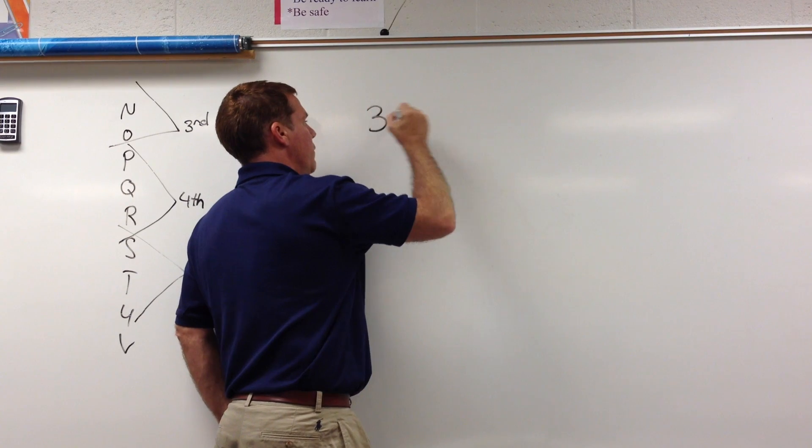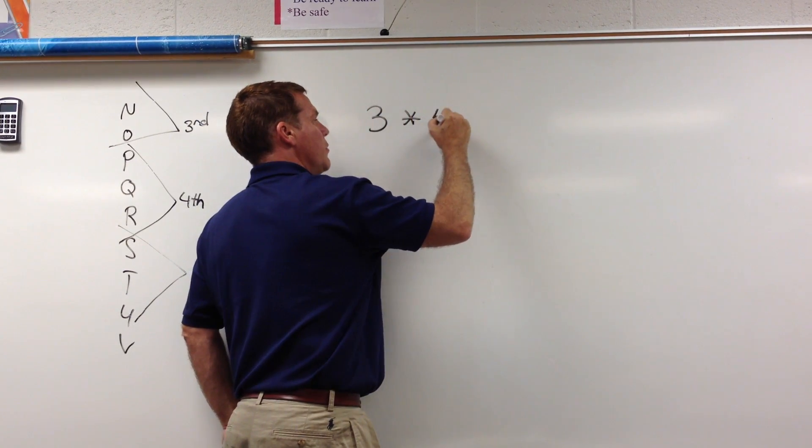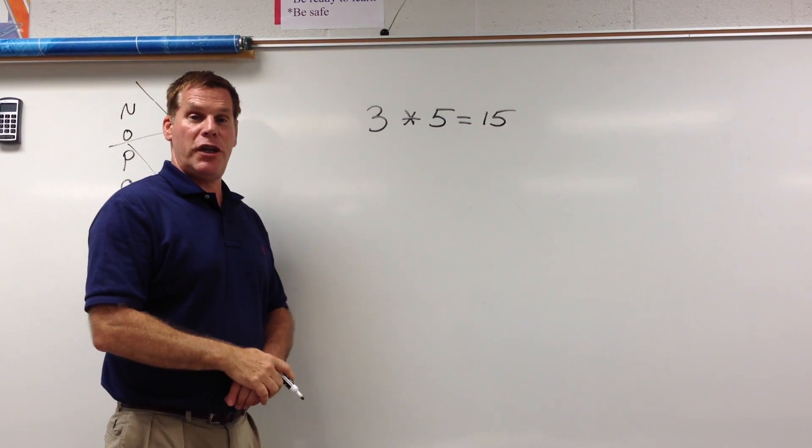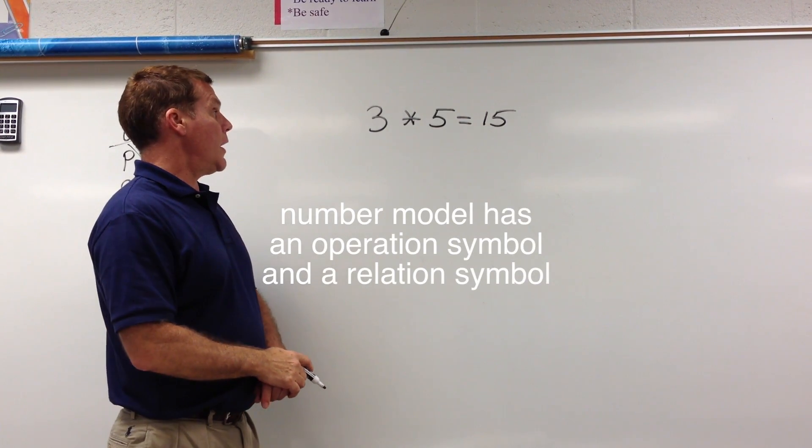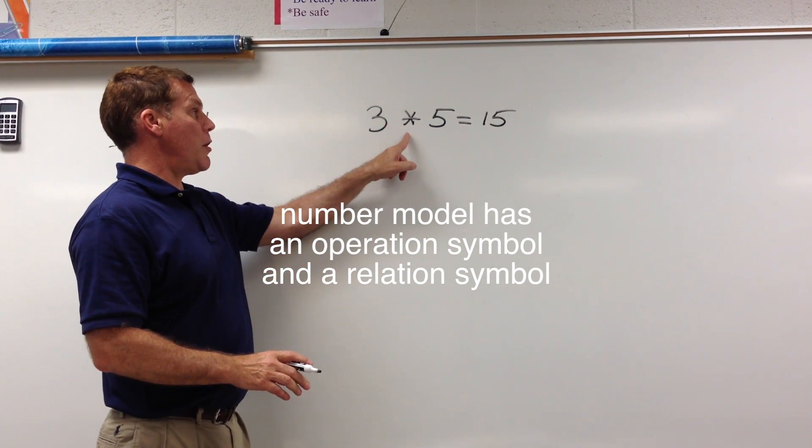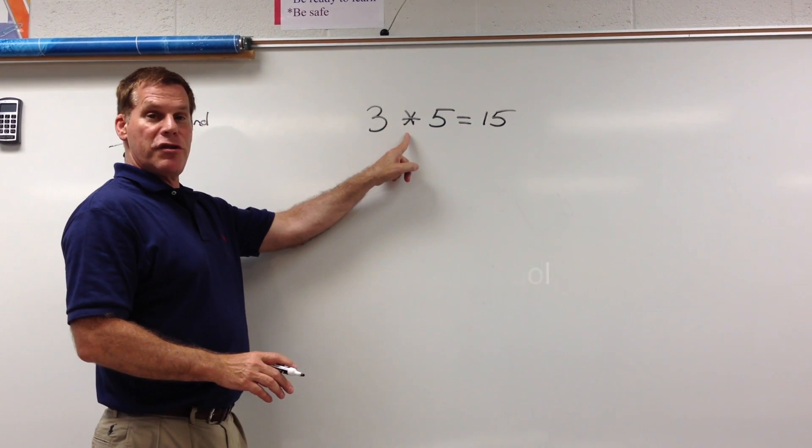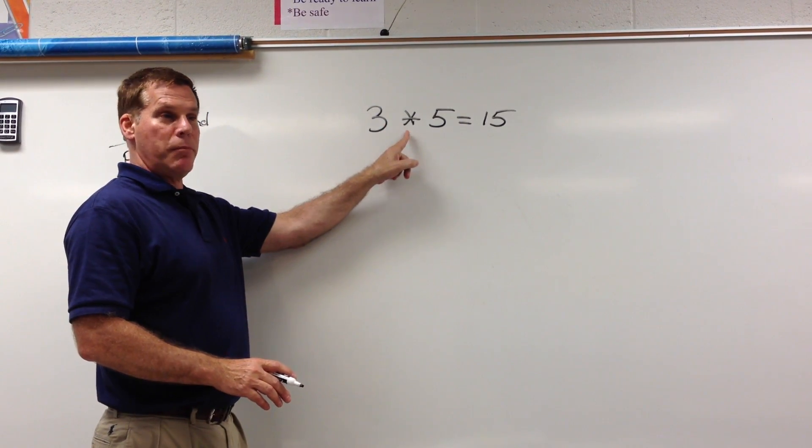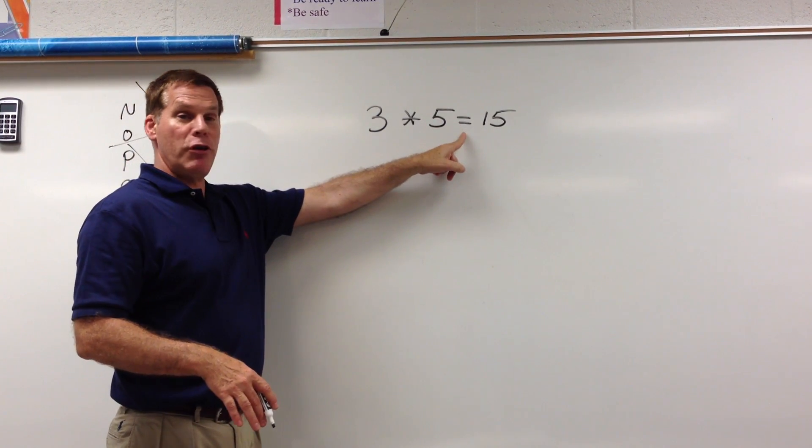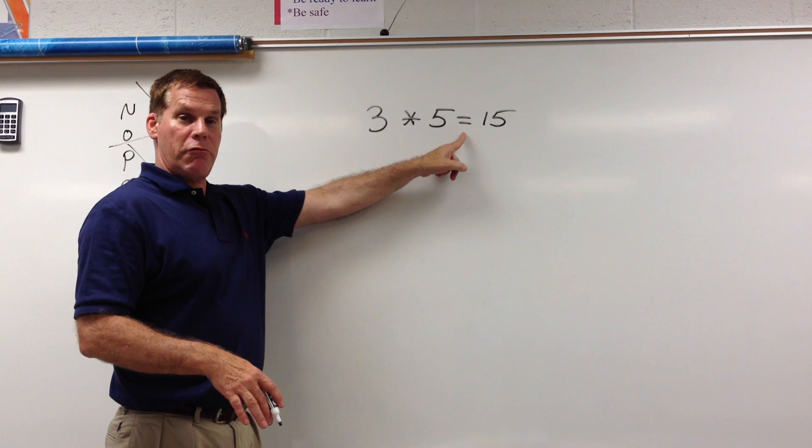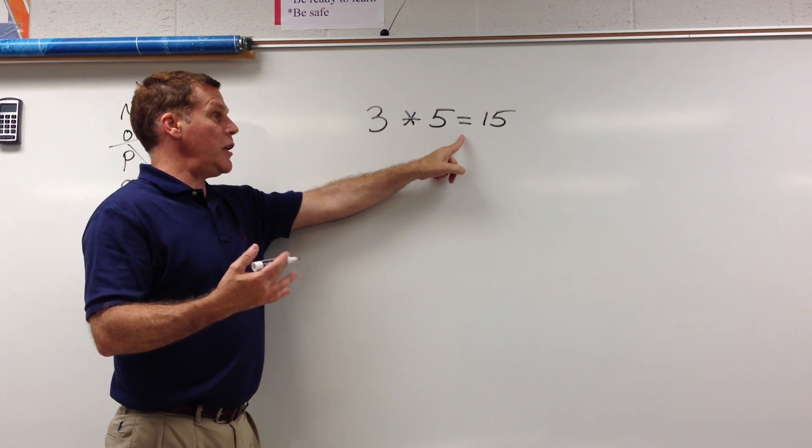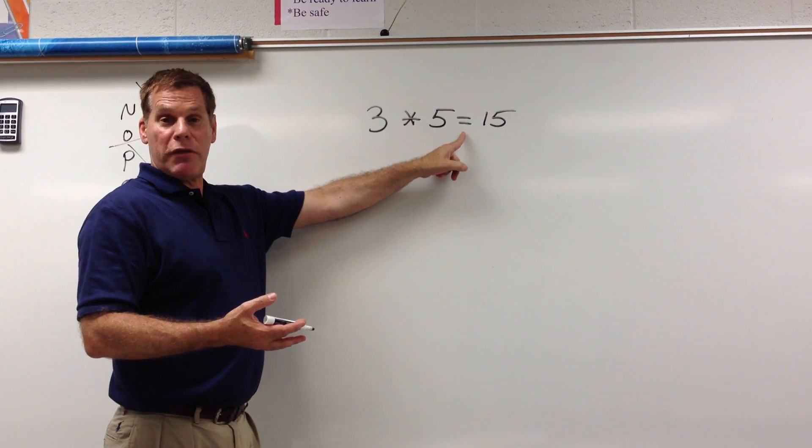The most important thing that the students have to know with the arrays is how to construct them looking at the number model that we're going to give them. Now a number model consists of, and I will give this an example: 3 times 5 equals 15, that is a number model. The most important thing with a number model is we have an operation symbol—multiply, divide, add, subtract—and a relation symbol: greater than, less than, equal. In this case we have an equal sign.